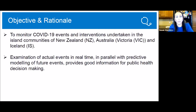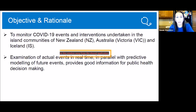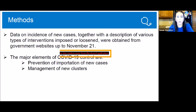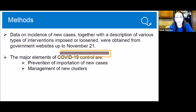So what was our reasoning for undertaking this? We wanted to monitor COVID-19 events and interventions that were taken in online communities similar to Newfoundland. We looked at New Zealand, Victoria in Australia, and Iceland, and we examined actual events in real time. This, along with the modelling group data, provided information for public health for their decision making. The data in this presentation is up to date to November 21st.